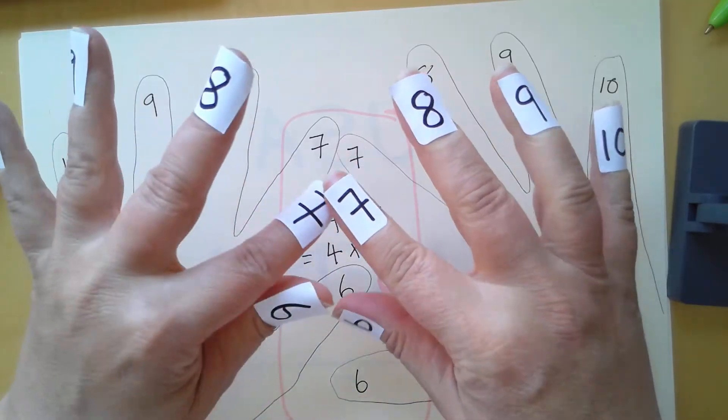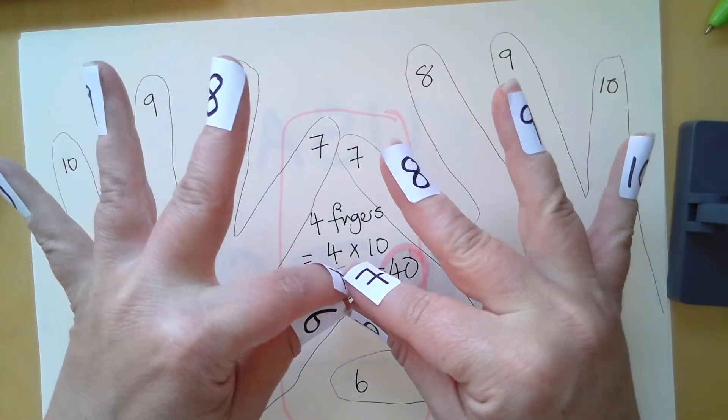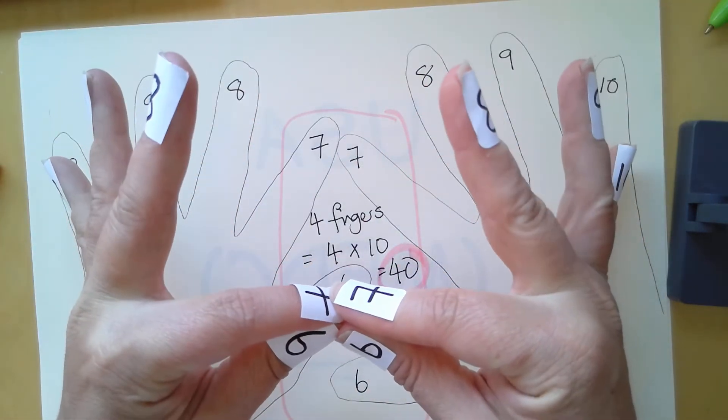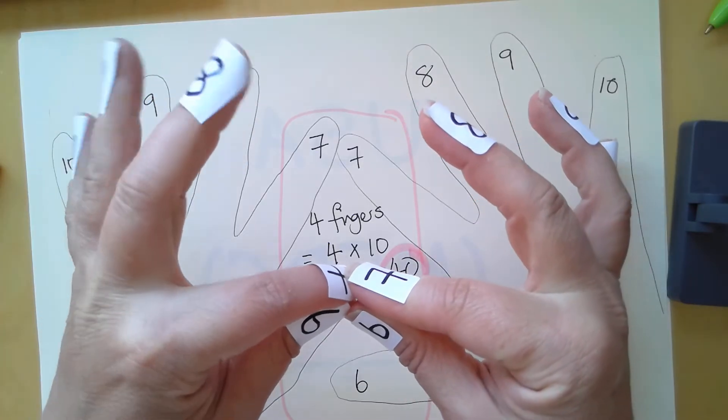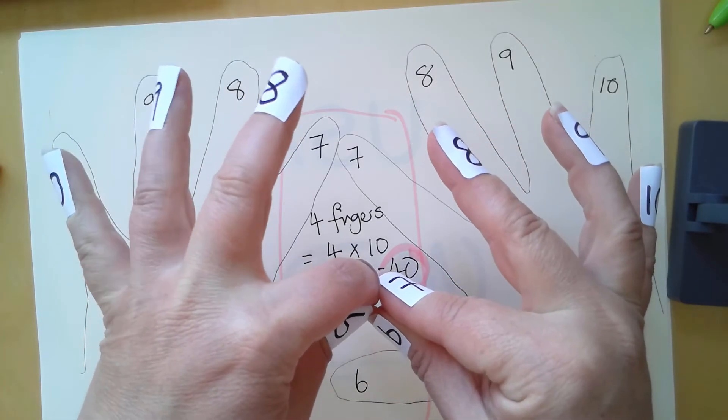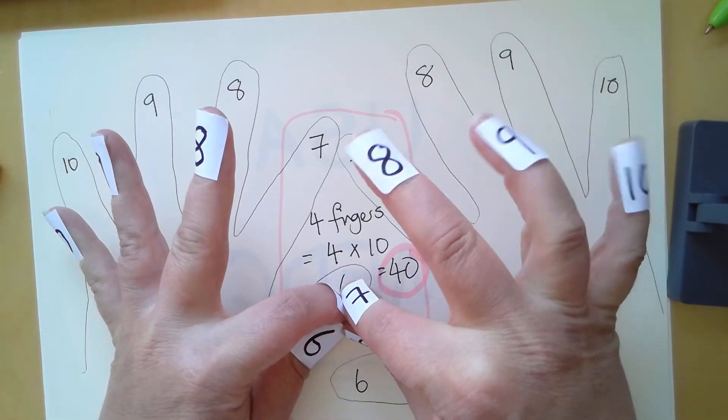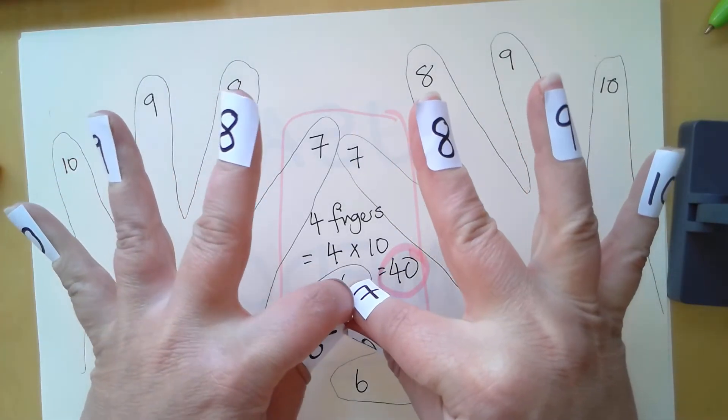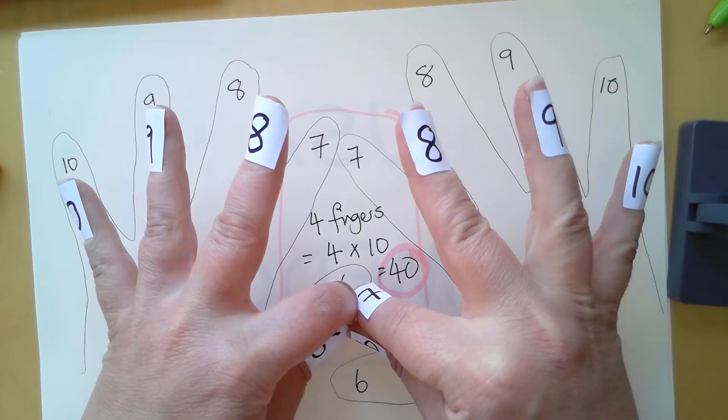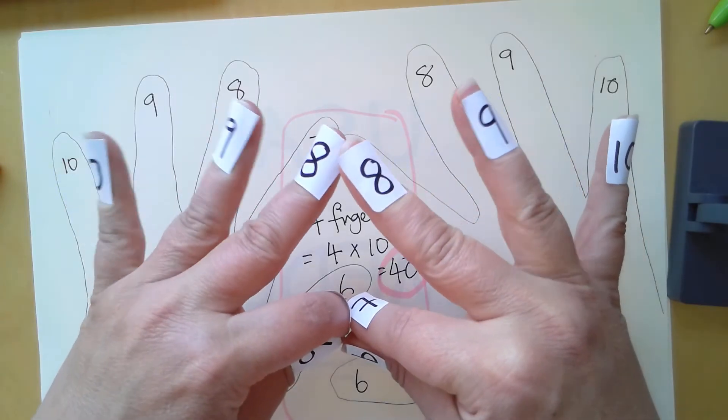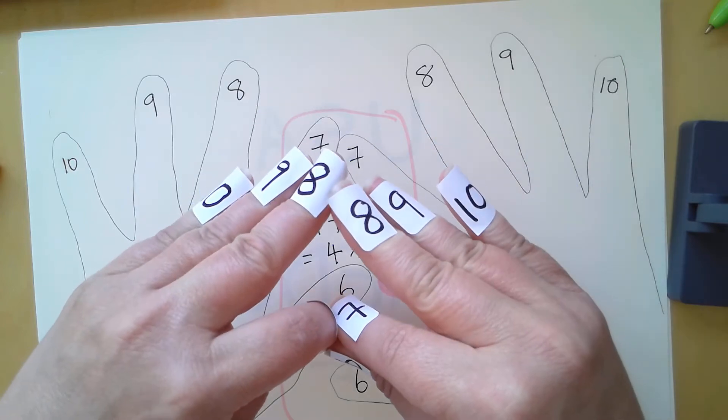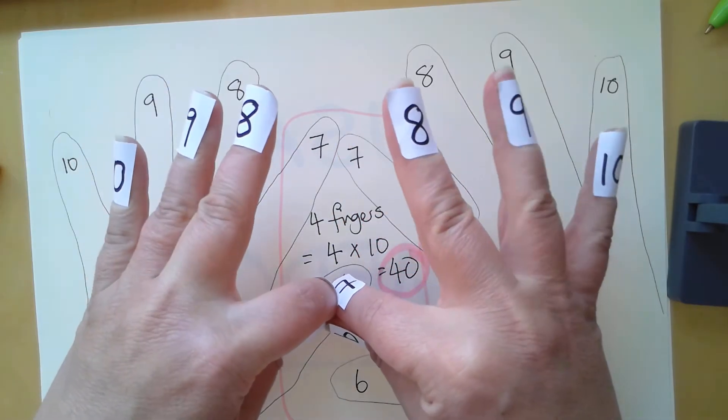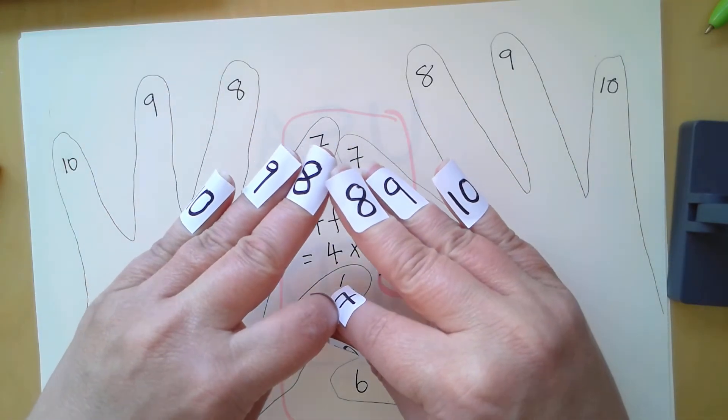We've got 40 and we've used those fingers already, but we've still got some fingers left over. Again, it doesn't matter what the number is on them. I've got three fingers on this side and three fingers on this side, and we need to multiply these three fingers by these three fingers together. Three multiplied by three equals nine.